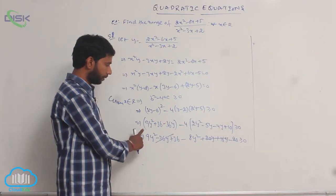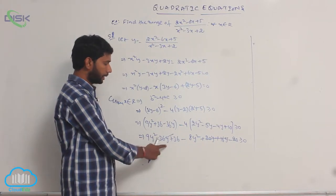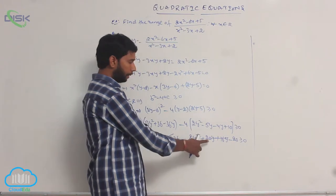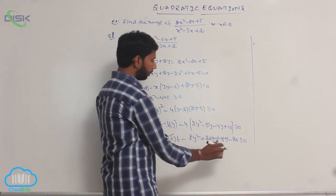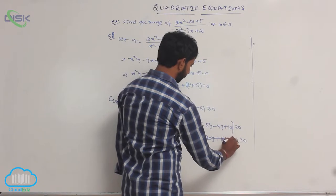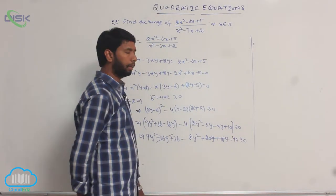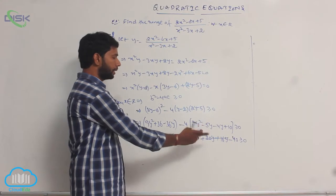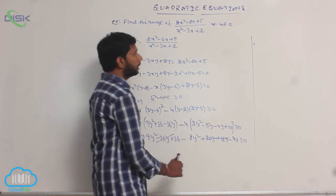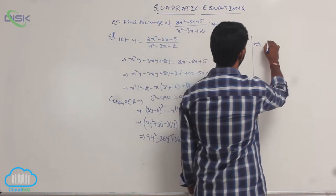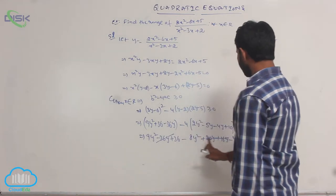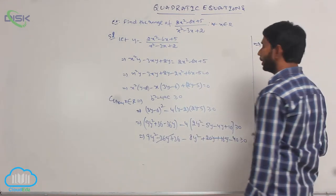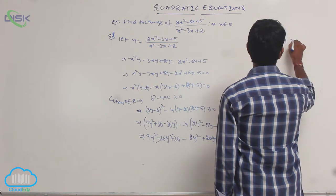Simplify the expression: 9y² minus 36y plus 36, minus 8y² plus 20y plus 16y minus 40, greater than or equal to 0. The terms minus 36y plus 36 get cancelled. 9y² minus 8y² gives y², and 36 minus 40 gives minus 4, so we have y² minus 4 ≥ 0.